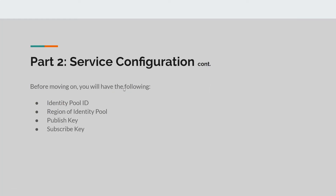Before moving on, you should have the following: your identity pool ID, the region of the identity pool — both from Cognito — your publish key, and your subscribe key — both from PubNub. Once you have these, we are ready to move on to the creation of our Unity project.